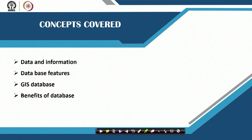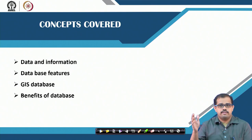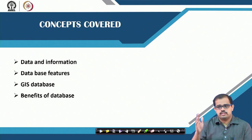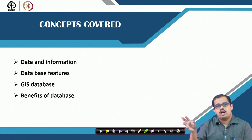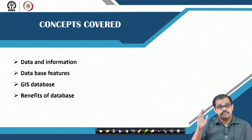In this class we would look at concepts. The foremost concept is data — what do you mean by data and what do you mean by information. Most students treat data and information as the same, but data is different and information is different. So we look at what is data, what is information, the difference between them, then database features, then the geographic angle of the database, and also any advantages and disadvantages of a database.